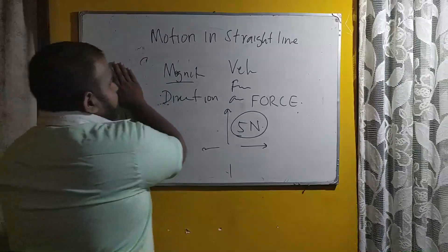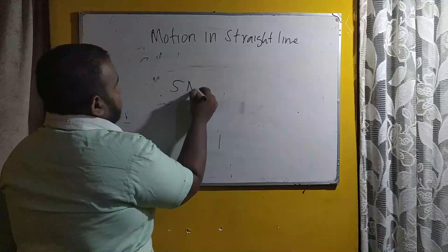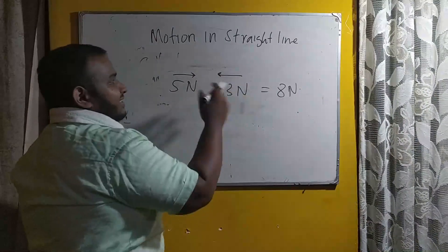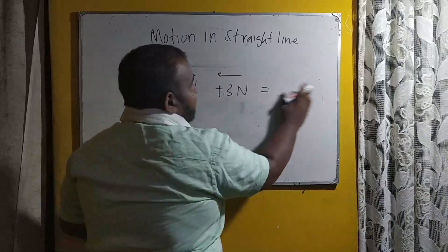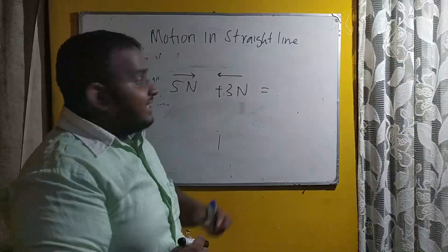Now let's look at the differences and similarities between vector and scalar quantities. A vector needs magnitude plus direction, whereas in scalar, only the magnitude is sufficient. Additionally, vector quantities cannot be added or subtracted using the usual method. If I ask you to add 5N and 3N, you can't just say it is 8N, because you don't know which direction each force is acting. If they are in opposite directions, they subtract; if in the same direction, you add them. So the usual addition and subtraction method cannot be used for vectors.